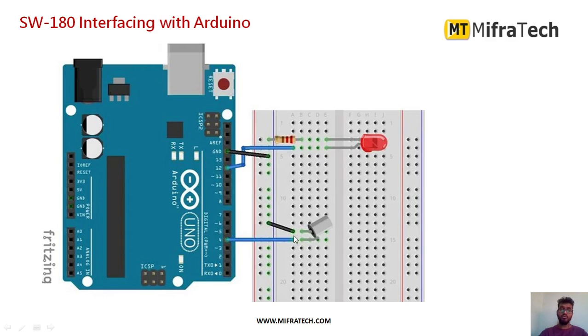The output pin I have connected to digital pin number 4 of Arduino Uno microcontroller. This is in order to interface the SW-180 sensor to Arduino Uno microcontroller.